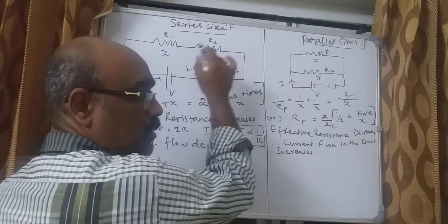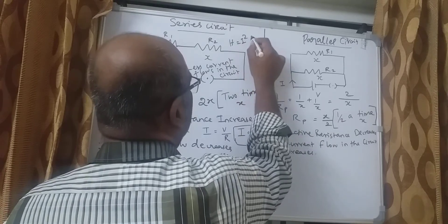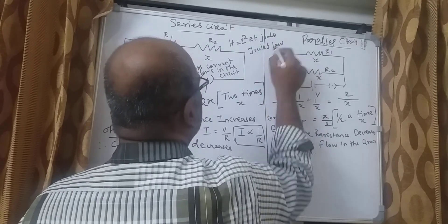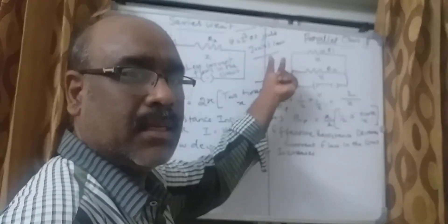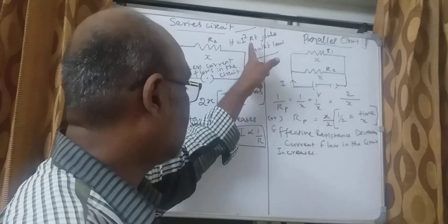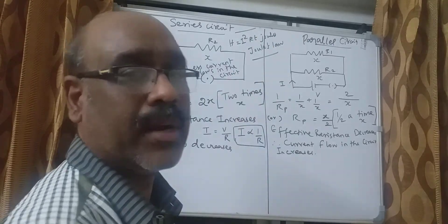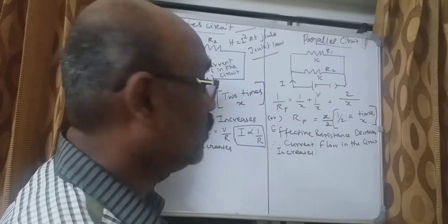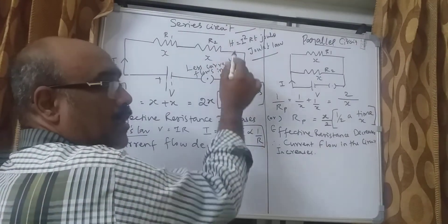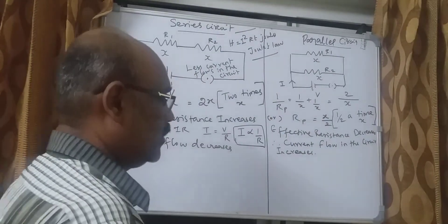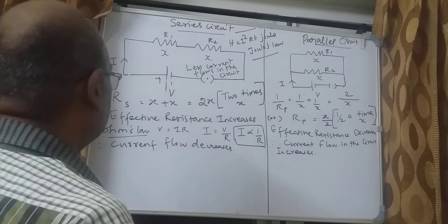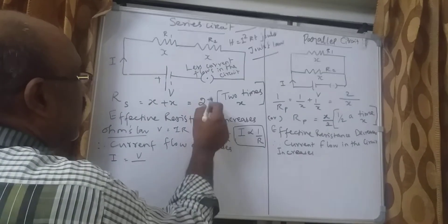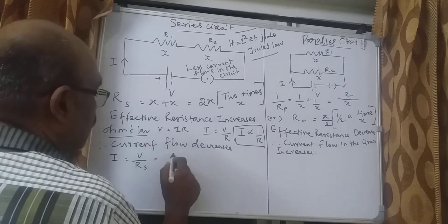The formula for heat energy is H = I²RT joules, according to Joule's law. Here I is the current flowing in the circuit, R is the resistance of the circuit, and T is the time period for which current flows. Now let us find the current for the series circuit: I = V/Rs = V/2X.